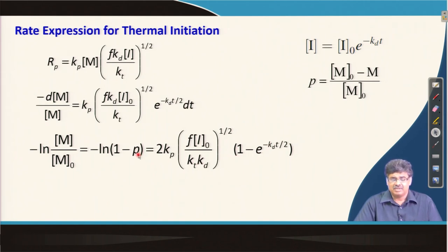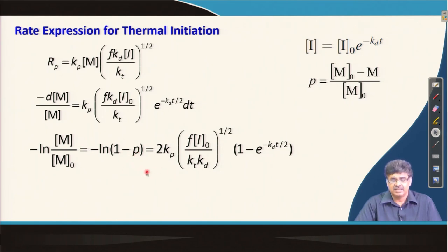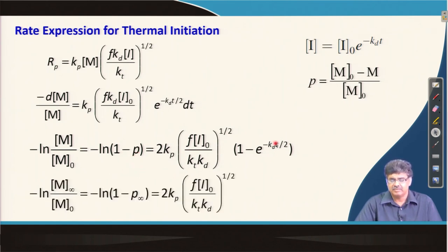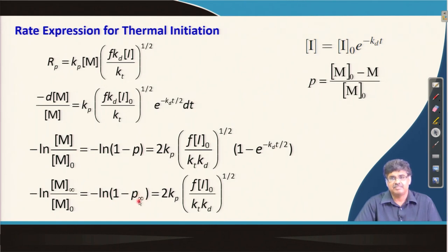At the end of polymerization, as time approaches infinity, we can determine the maximum possible conversion p_∞ achievable in a radical chain polymerization. Setting t = ∞ makes the exponential term go to zero, giving p_∞ from this expression. We will use this expression to solve a numerical problem in the next lecture and also discuss molecular weight in radical chain polymerization.